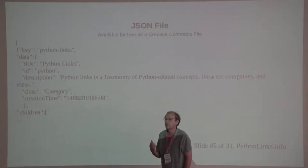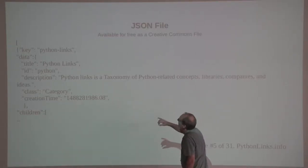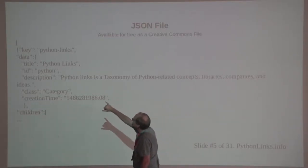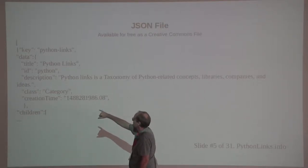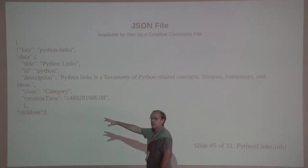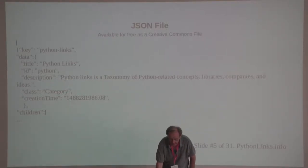You can grab the information as a JSON file. You'll see it has an ID, it's got the name — Python Links — a text description, the class, the category, and the creation time. And then it's got its children. So it's a whole JSON tree that you can grab.